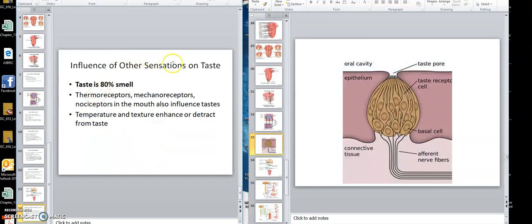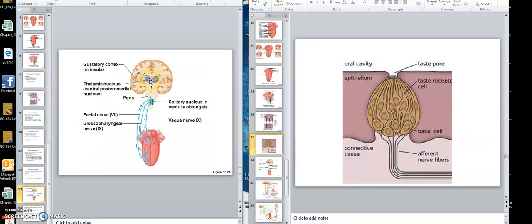The influence of other factors. Taste is 80% smell. Remember I mentioned that? Thermal receptors, mechanoreceptors, nociceptors also influence taste. Temperature and texture enhance it. We have a gustatory nucleus. That's where it interprets it. It's connected with the rhinencephalon, which is the smell area.